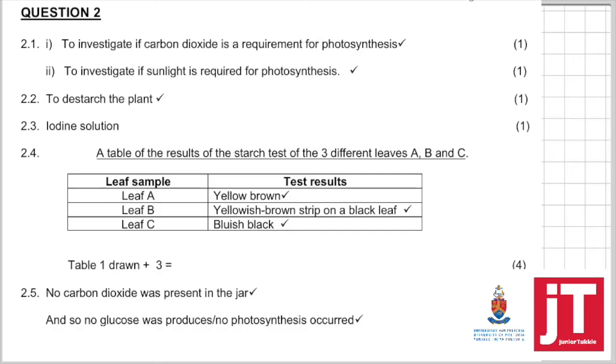Leaf B, yellowish-brown strip on a black leaf. The parts that are exposed to sunlight will be black, and the parts that are covered by the strip will be yellowish-brown.